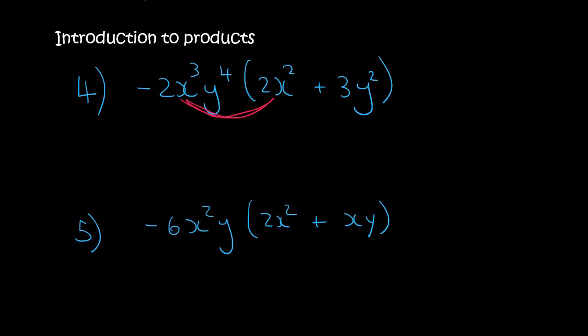So now if we multiply these two together, 2 times minus 2, or minus 2 times 2. You can just type it on the calculator. It's minus 4. Then x. Then 3 plus 2 is 5. And then because there's no other y, you can just write y4.